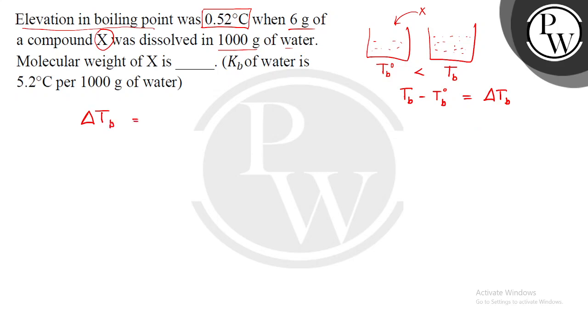That is equal to this formula. Elevation in boiling point is equal to Kb, which is your molal elevation constant, times W, which is the mass of the solute, into 1000 divided by your molecular mass of the solute into the mass of the solvent. So this is the formula.